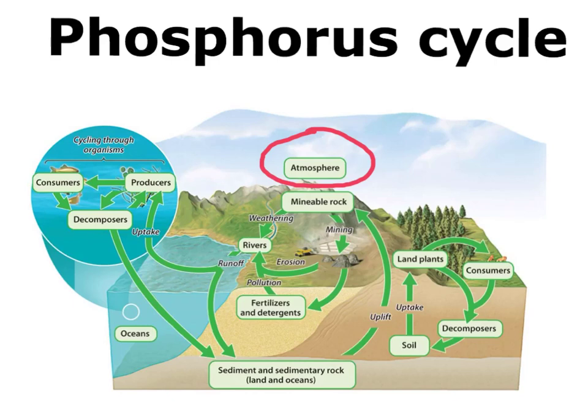The material that's weathered out of the rocks is either going to go into rivers or directly into the soil. When it's in the soil, it gets taken up into land plants, and then those plants are eaten by consumers. That's ultimately the way that we get all the phosphorus that we need — it comes from the vegetables and things that you're consuming. Those consumers can eventually decompose and go back to the soil, creating its own little mini cycle.